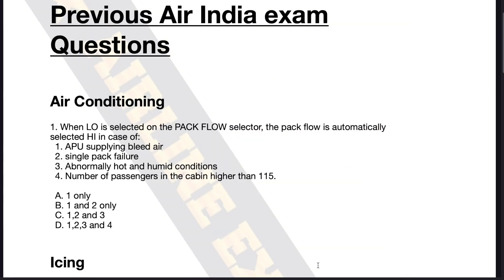One of the questions which came in recently was from the air conditioning system. When low is selected on the pack flow selector, the pack flow is automatically selected high in case of: number one, APU supplying bleed air; number two, single pack failure; number three, abnormally hot and humid conditions; number four, the number of passengers in the cabin higher than 115. The options are: one only, one and two only, one two and three, or one two three and four.